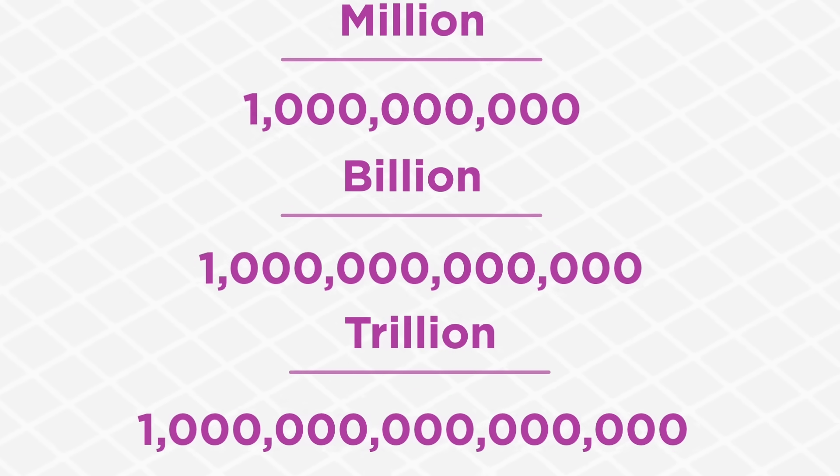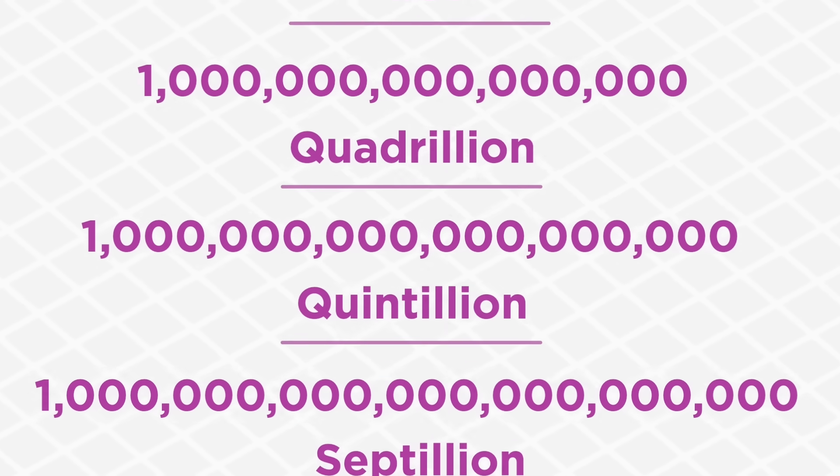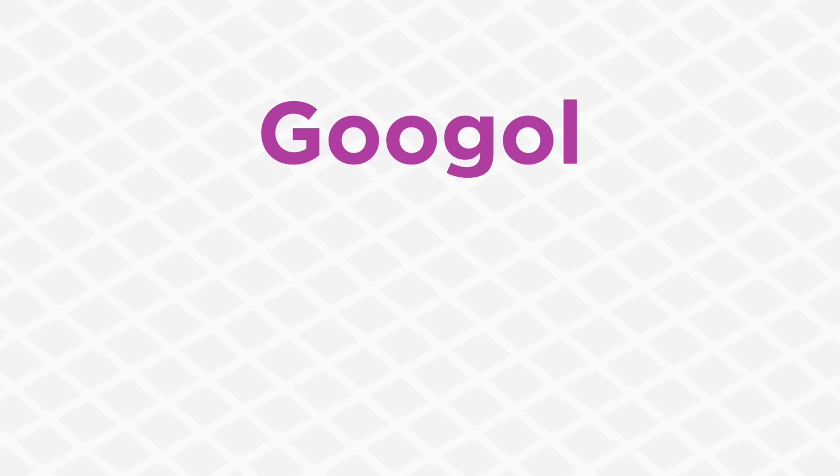You just keep going up through quadrillion, quintillion, septillion, and so on and so on all the way until you eventually reach a Google.